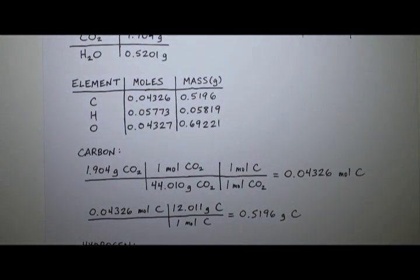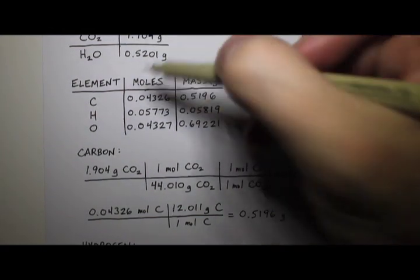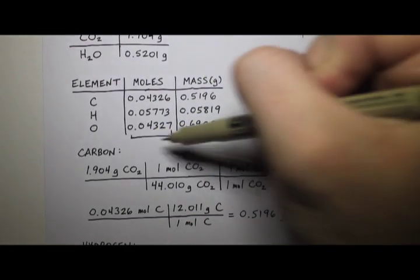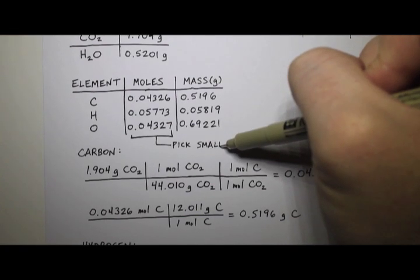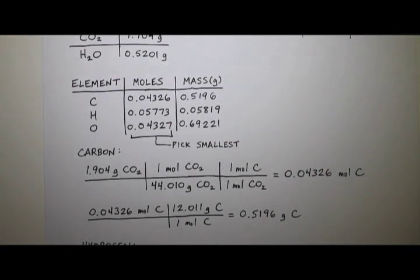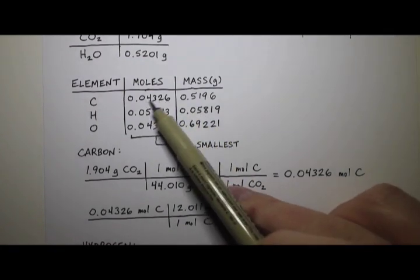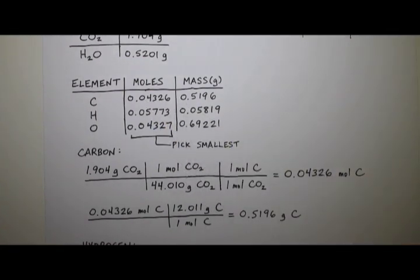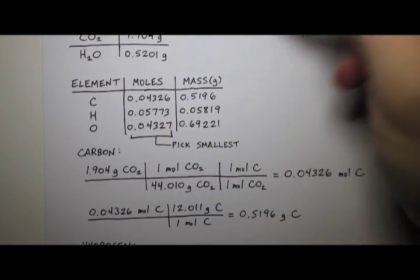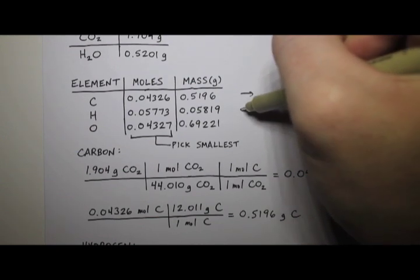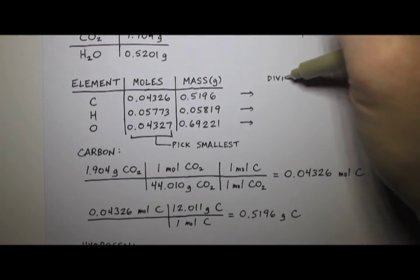So we're almost done. Now comes the easy part. Look at the moles column here. And pick the smallest one. What's the smallest value out of those numbers? So it looks like, well, these two are almost the same here. I guess 0.04326 is the smallest. I mean, they're really pretty much the same. So we're going to pick the smallest thing and we're going to divide each of these three numbers by the smallest one. So if I divide them, so I'll kind of do this over here. So this is after you divide by the smallest.